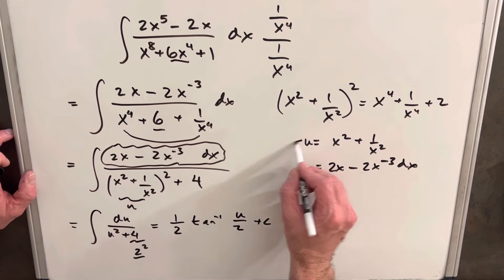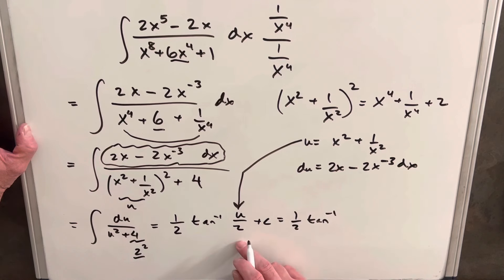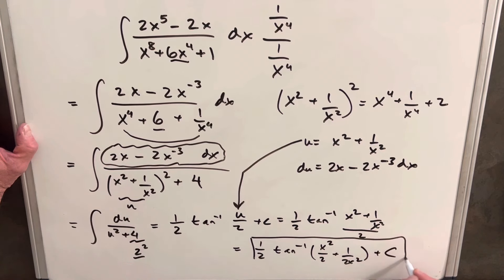And to finish it off, we just need to back substitute. We're going to have half tan inverse, x squared plus 1 over x squared, all divided by 2. Let me just clean that up a little bit. So I think for our final answer, we'll leave it like half tan inverse x squared over 2 plus 1 over 2x squared. You can get a common denominator. I think I'm just going to leave it like this. And call it good.